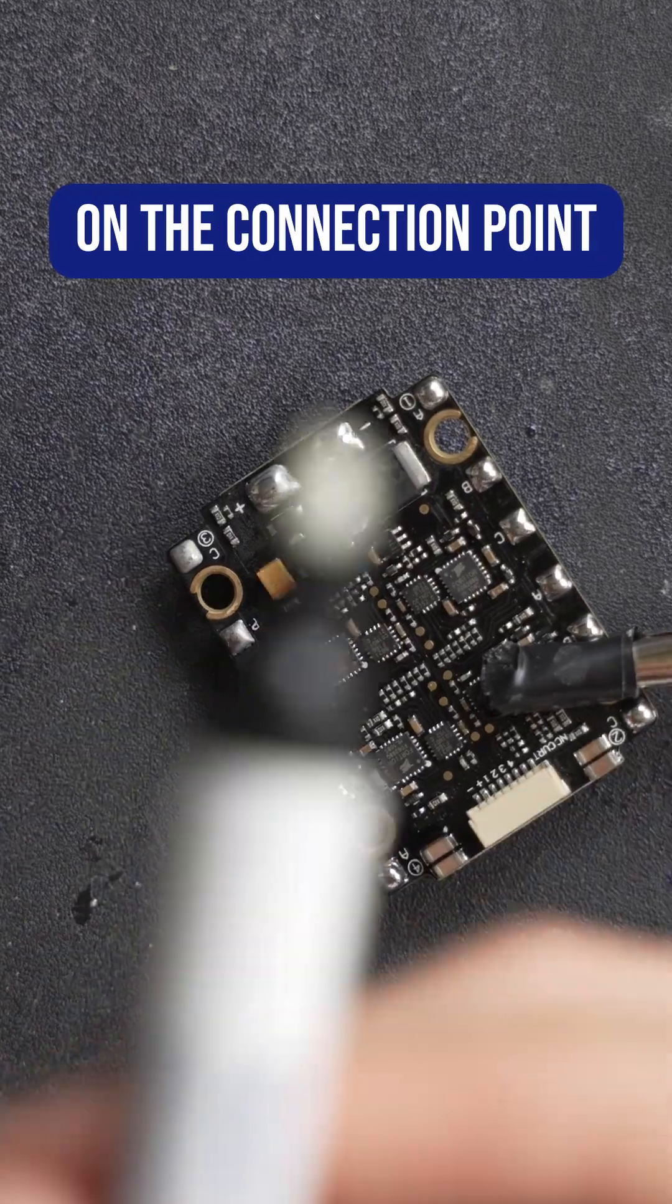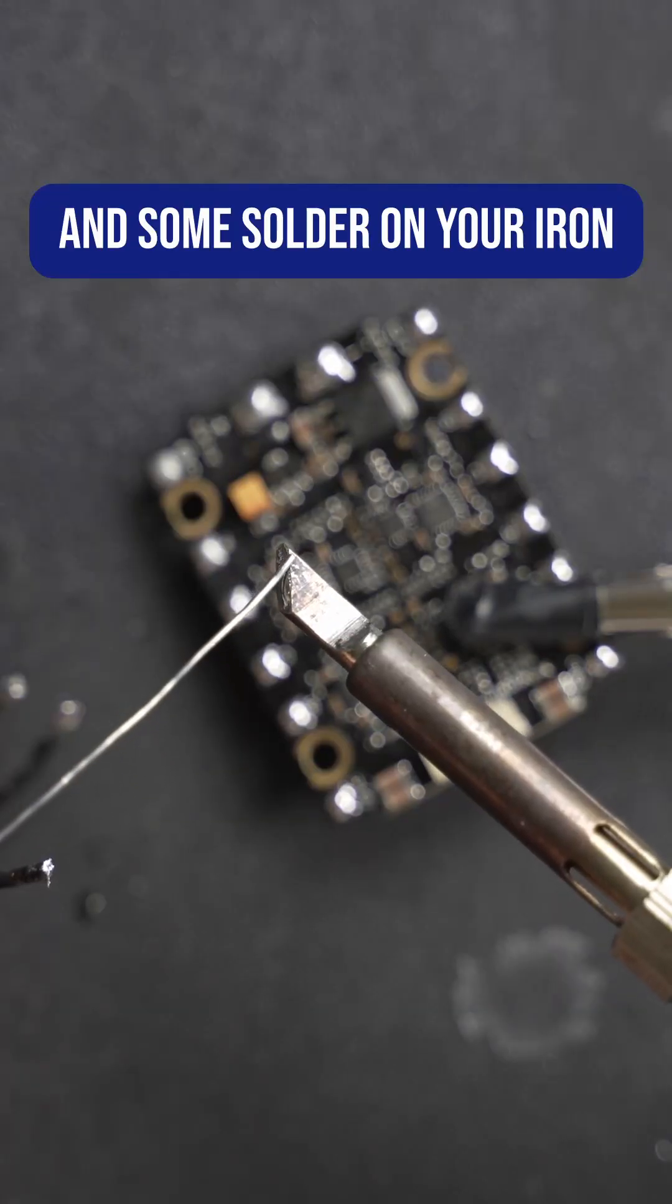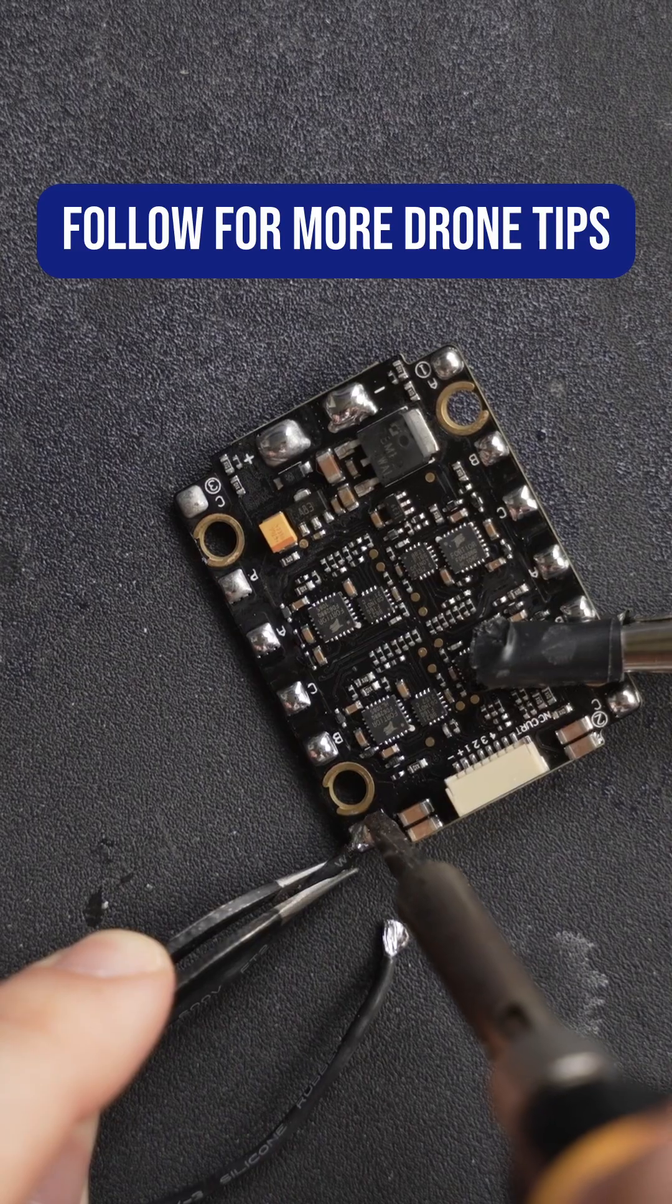Finally, put some flux on the connection point and some solder on your iron and make the connection. Follow for more drone tips.